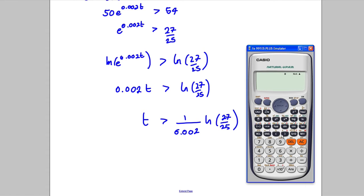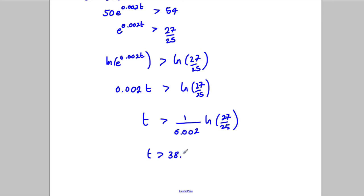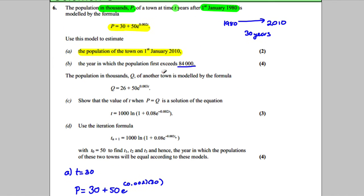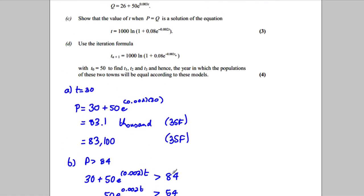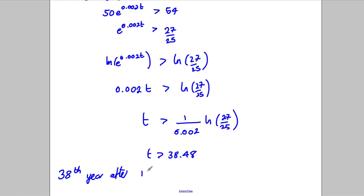So I can get that out, so I can type this as the natural logarithm of 27 over 25, and all of that divided by 0.002, and I get 38.48, so T has to be bigger than 38.48. Looking up here, it says the year in which it first exceeds, well it exceeds it midway through the year, which is fine, so it exceeds it in the 38th year, so the 38th year after 1980, 1980, therefore it would be 2018. 2018 would be the first year where it exceeds it.